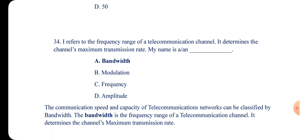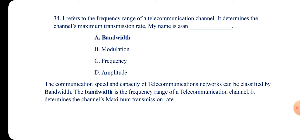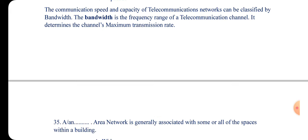Question 34: This refers to the frequency range of a telecommunication channel. It determines the channel's medium transmission reach. The concept is bandwidth. The communication and speed capacity of a telecommunication network can be classified by bandwidth. Bandwidth is the frequency range of a telecommunication channel — it determines the channel's medium transmission reach.